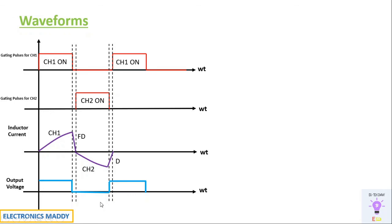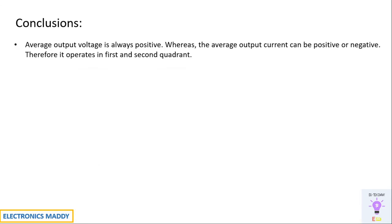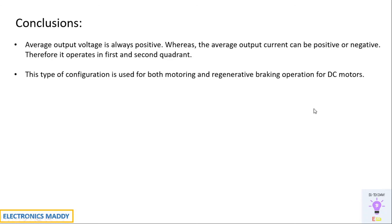So the conclusion: the type C chopper operates in first and second quadrant. It operates in first quadrant when CH1 and the freewheeling diode are conducting, and in second quadrant when CH2 and D2 are conducting. The average output voltage is always positive, whereas the average output current can be positive or negative. Therefore, it can be used for motoring mode in first quadrant and regenerative braking mode in second quadrant. This is why type C configuration, combining type A and type B, is quite popular.